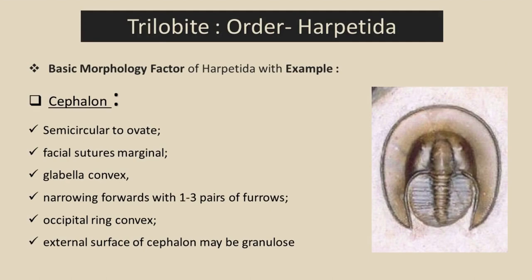Now we will talk about the next order, Order Harpetida. I want to discuss its basic morphology in three points: cephalon, thorax, and pygidium. In this figure we can see that the cephalon is semicircular to oval in shape. The facial suture is marginal — it runs along the cephalon margin, and the eyes are not involved with the suture.